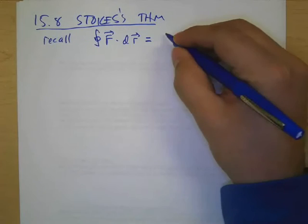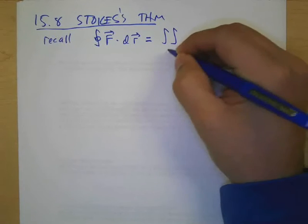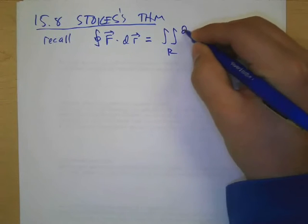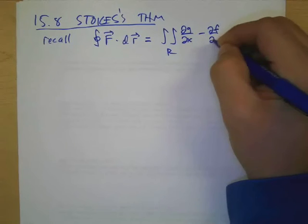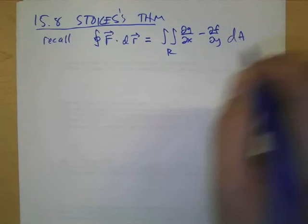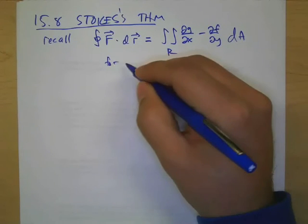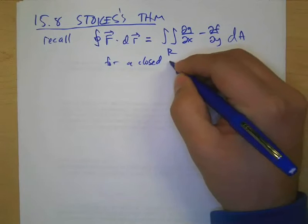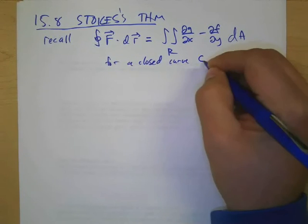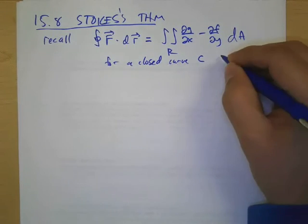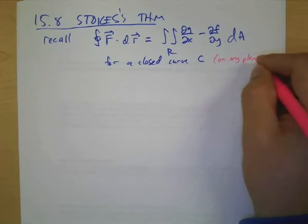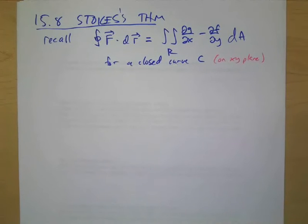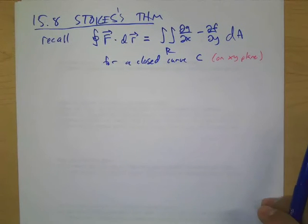The partial of something... There were two partials. Partial Q over partial x minus partial F over partial y, right? Okay, so this is for a closed path or closed curve C. And here's the stipulation I'm going to emphasize: this is on the xy plane, right?